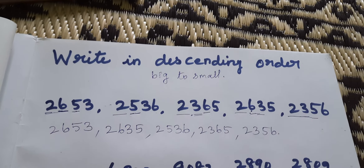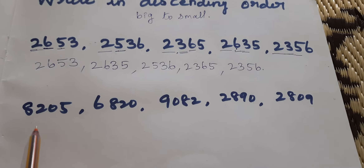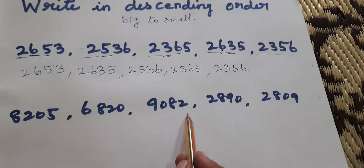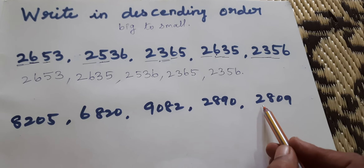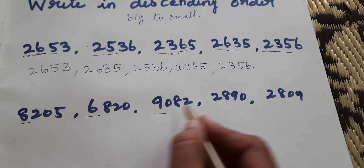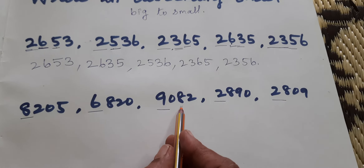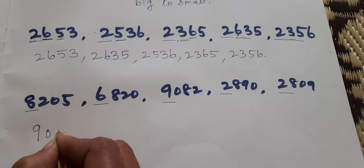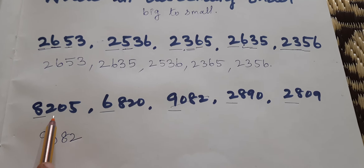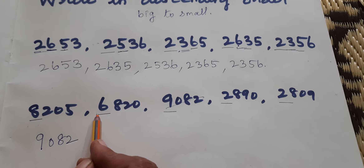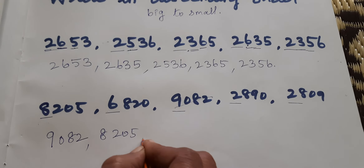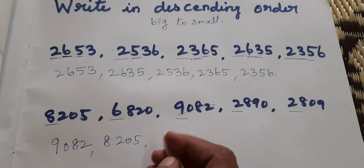Descending order: big to small. One more example. Numbers: 8205, 6820, 9082, 2890, 2809. Which one is the biggest number? Thousands place: 8000, 6000, 9000, 2000, 2000 — 9000 is the biggest. So 9082 is first. Next: 8000 is the biggest among the rest, so 8205. Then 6000 is next, so 6820.